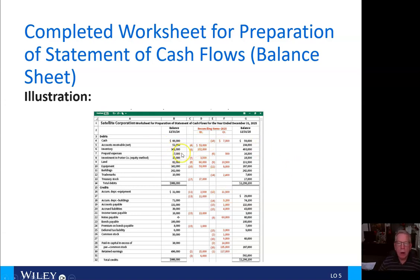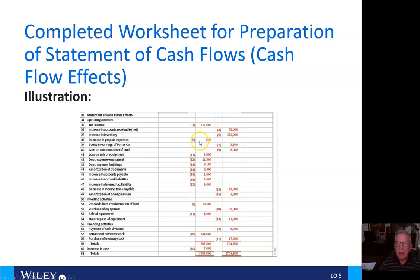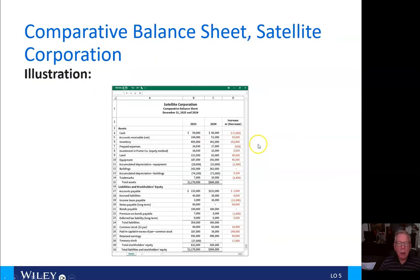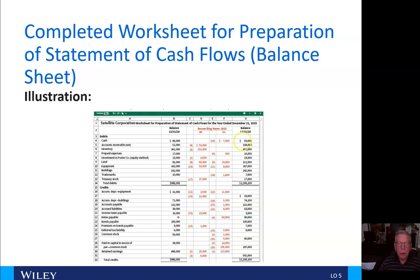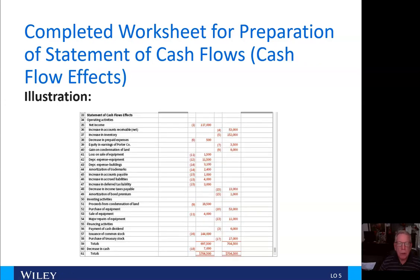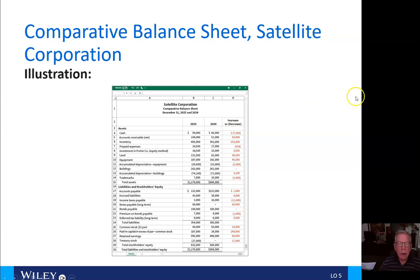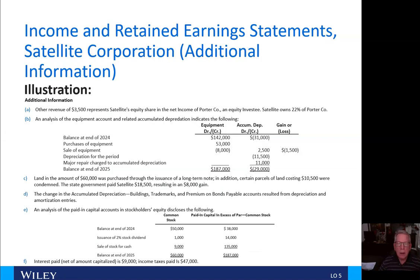Then we looked at inventory here of $152,000 under number five. We have an increase in inventory from that balance sheet of $152,000. For number six, we have prepaid expenses of $500, which comes back to our increase in prepaid expenses on the balance sheet.